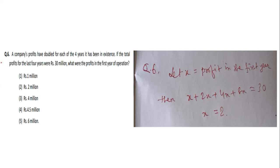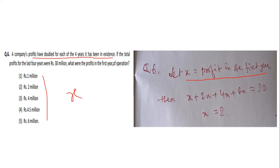Question six: a company's profits have doubled for each of the four years it has been in existence. If the total profit for the last four years is 30 million, what was the profit in the first year? Let x be the profit in the first year. Then year 1: x, year 2: 2x, year 3: 4x, year 4: 8x.